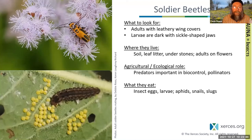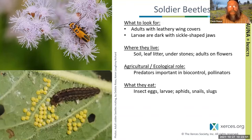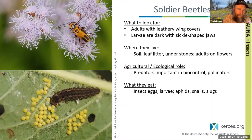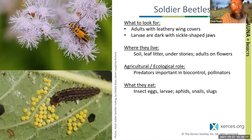Soldier beetles are another group that contributes to pest control. Their larvae have sickle-like jaws and hunt in the upper soil layer, leaf litter, or on plants, eating prey like slugs or snails. Adults have leathery wing covers and are predatory but also visit flowers for nectar and pollen, contributing to pollination of some plants. The larvae overwinter in leaf litter, and pupation occurs in the soil.